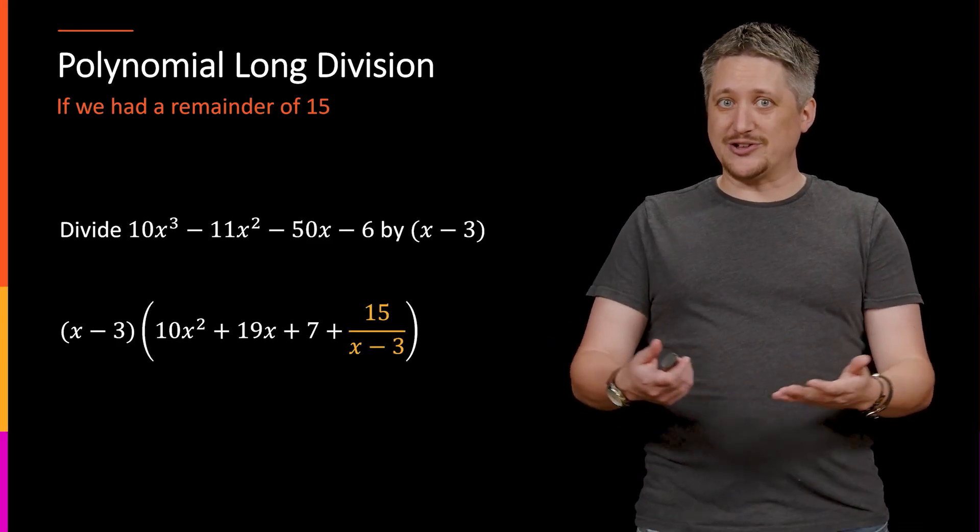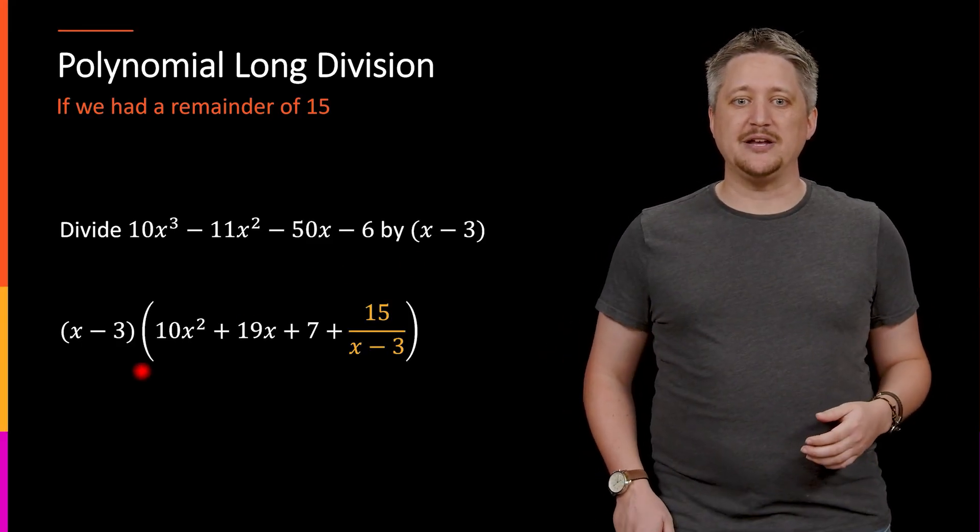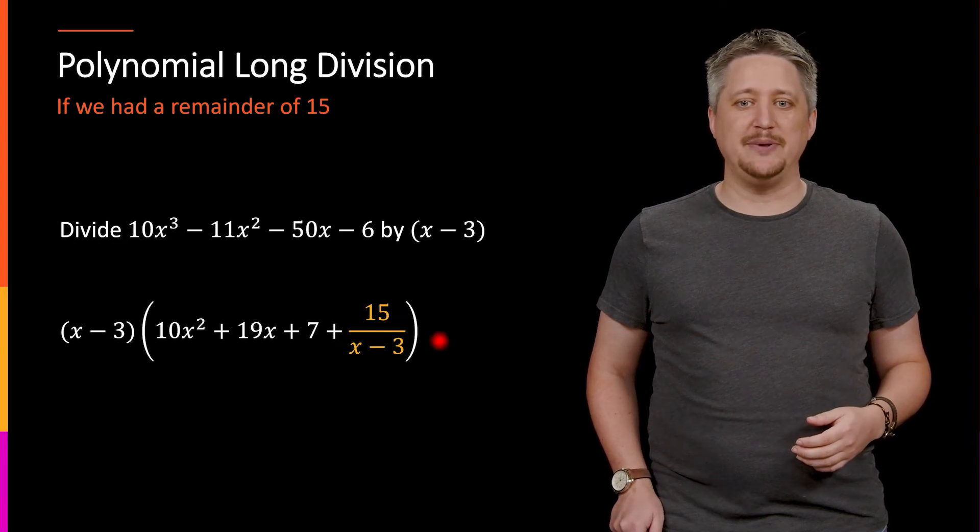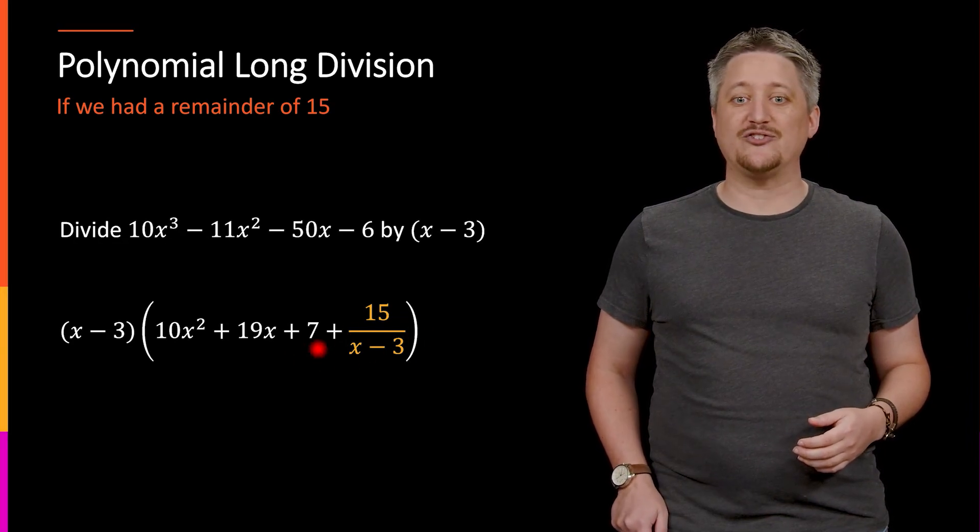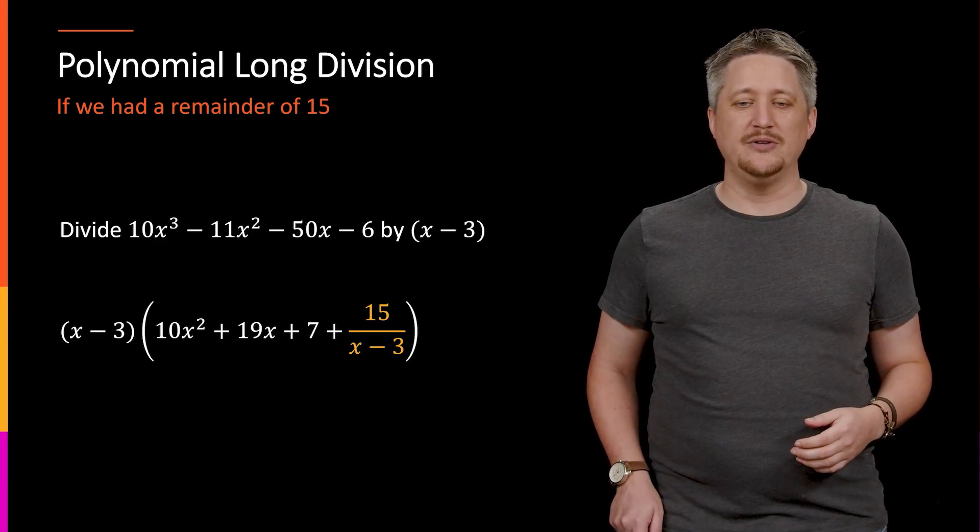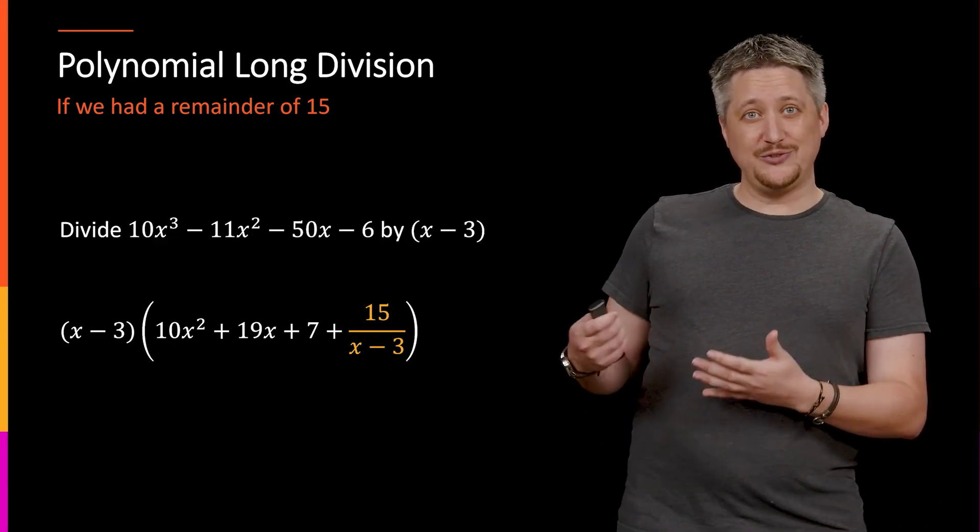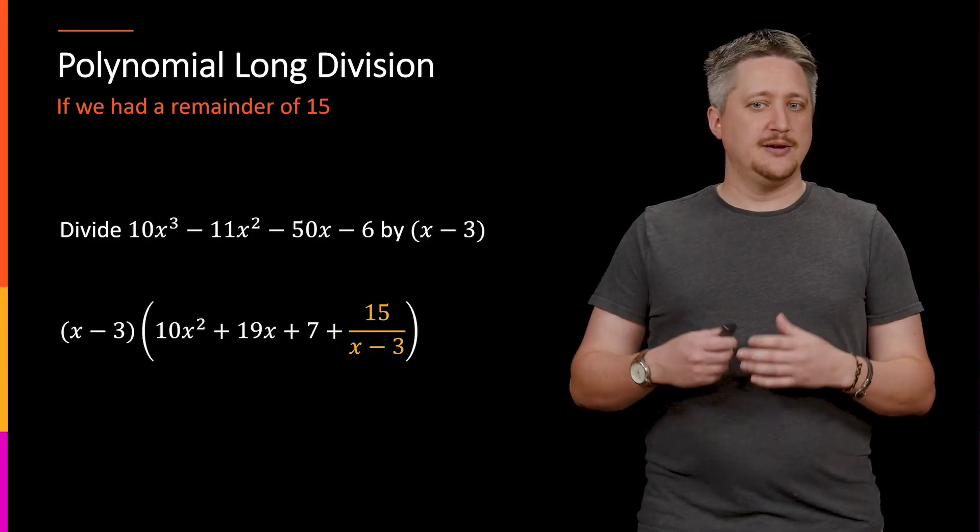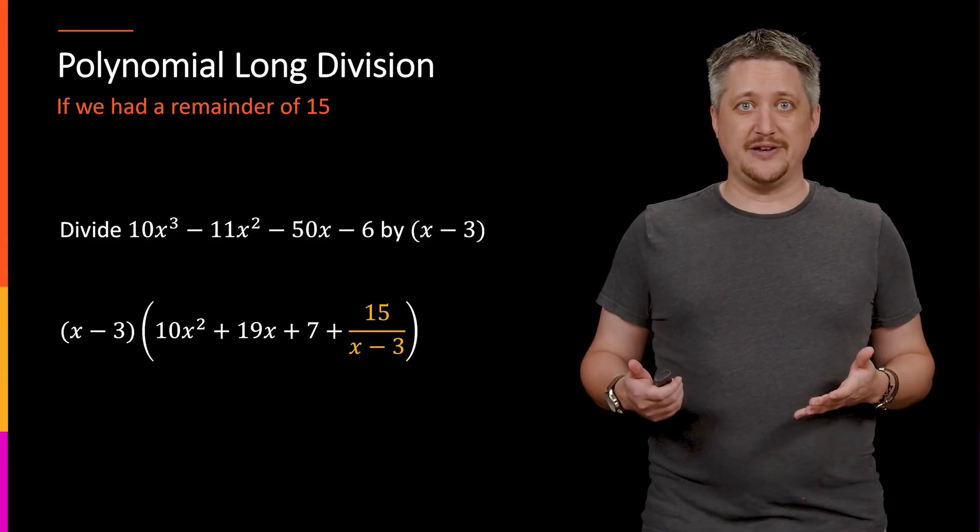meaning that we had the same polynomials before, but we're doing a minus six instead of a minus 21. We go through the whole process, we get basically the same polynomial except we would be shy a little bit because we'd end up with a 15 as the remainder instead of a zero. But we do the same thing when we try to factor.